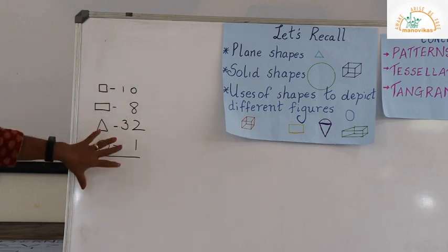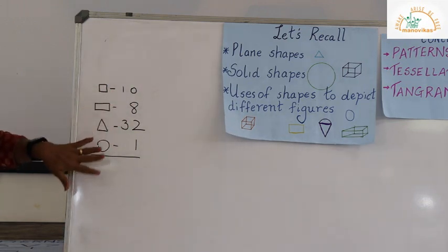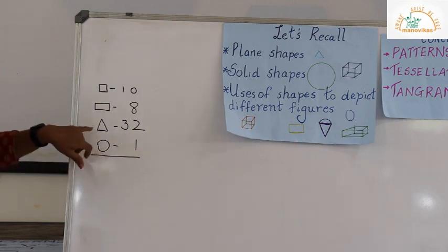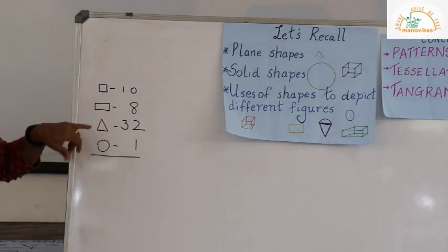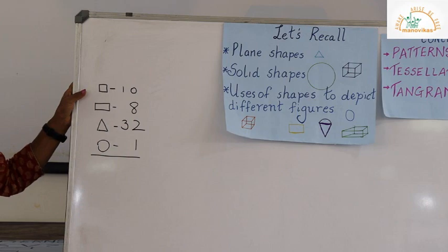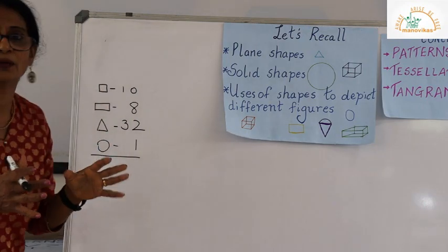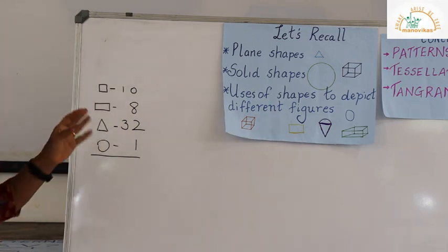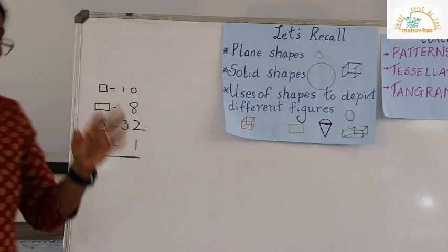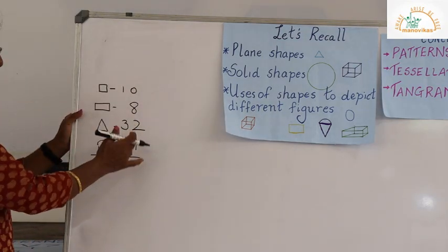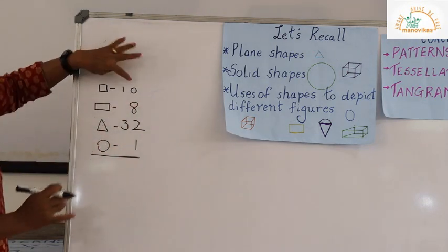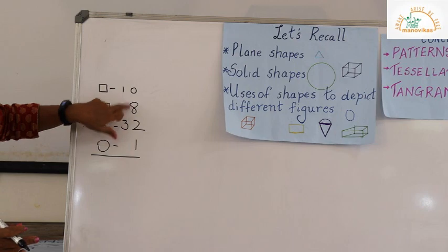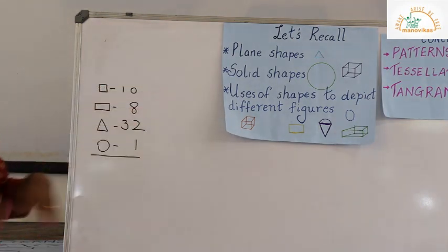So in these shapes, we have the least number of shapes being the circle and the triangle is the most, that is thirty-two. Now if you want to find out the total number of shapes, what we are going to do is add. When we add, we get the total. Let's add. Here in the ones place, we have a zero. The number eight, when we add to zero, we get eight.